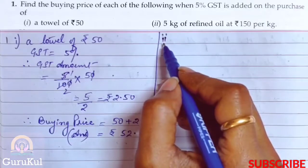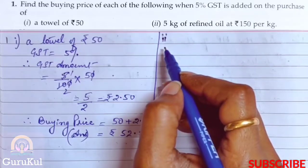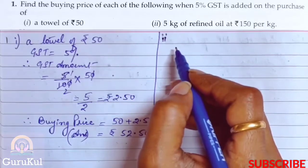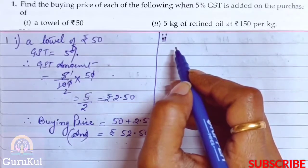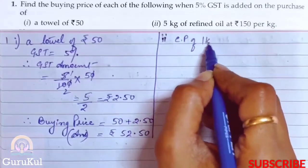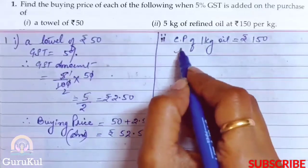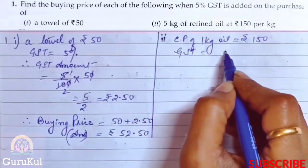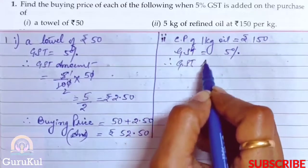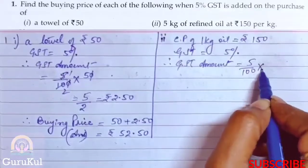Now the second part of Question 1, where GST is 5% and we have to find the buying price of 5 kg of refined oil at ₹150 per kg. So the cost price of 1 kg of oil is ₹150 and GST is 5%.